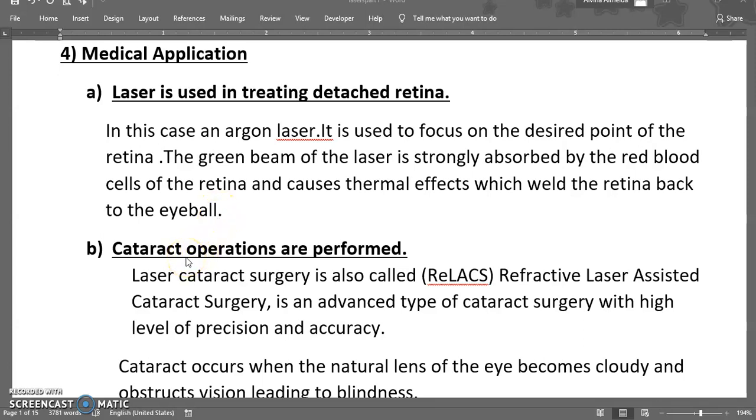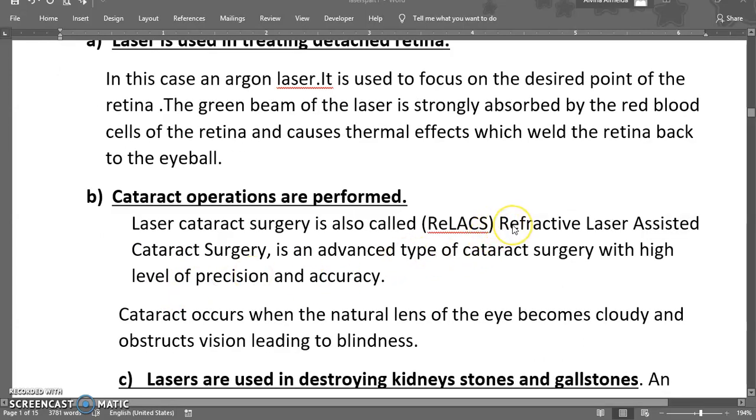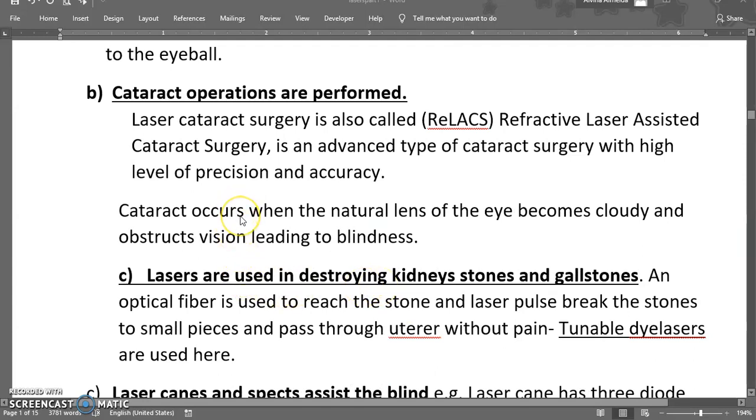Next is cataract operations. A laser cataract surgery is also called RELACS, that is refractive laser-assisted cataract surgery. It is an advanced type of cataract surgery with a high level of precision and accuracy. The cataract occurs when the natural lens of the eye becomes cloudy and obstructs vision to blindness. The surgeon makes a small conical incision and opens the lens with the laser. The laser then softens the cataract which is then removed by using ultrasound probe.